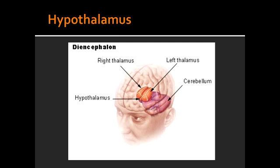What makes antidiuretic hormone? Antidiuretic hormone is made by the supraoptic nucleus of the hypothalamus. What makes oxytocin? Oxytocin is made by the paraventricular nucleus of the hypothalamus. Even though ADH and oxytocin are made by the hypothalamus, they are stored and released by the posterior pituitary, also known as the neurohypophysis.